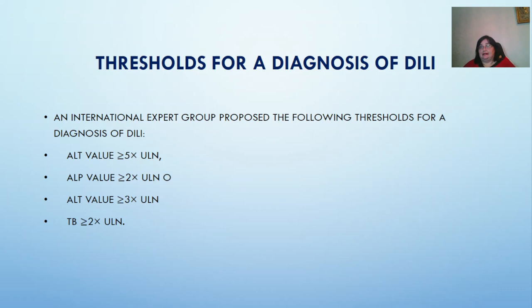Three thresholds for diagnosis of DILI — drug-induced liver injury. An international expert group proposes the following thresholds for a diagnosis of drug-induced liver injury: ALT more than 5 times the upper limit of normal, ALP more than 3 times the upper limit of normal, and total bilirubin (TB) more than 2 times the upper limit of normal.